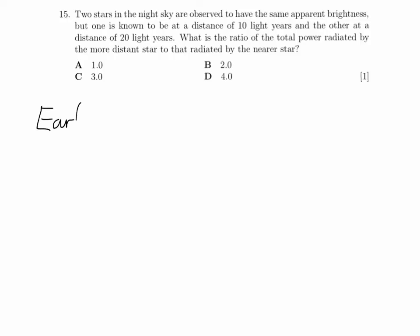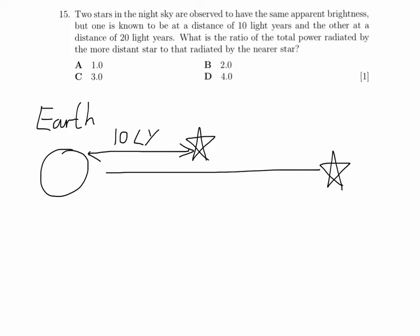So this question is about the distances to stars and the power that they radiate. I'm just going to draw a quick diagram to help us visualize this. We've got our Earth there, and we've got our nearest star which is 10 light years away, and we've got the more distant star that we're talking about in